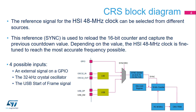Four different sources can be selected for the clock recovery system: an external signal on a GPIO, the 32 kHz crystal, or the USB start of frame signal can be used as a clock source to create a reference signal to calibrate the HSI 48 MHz oscillator.